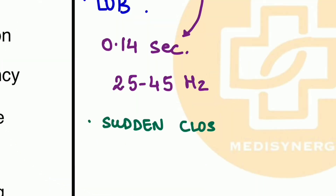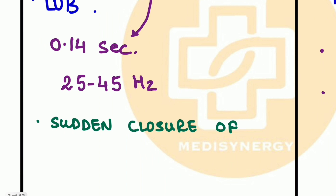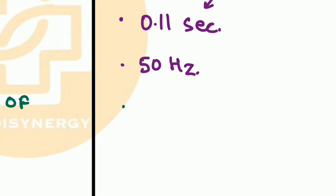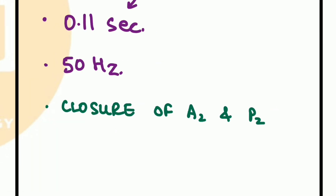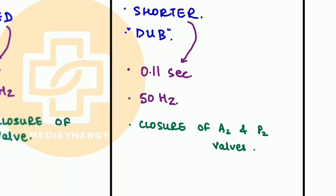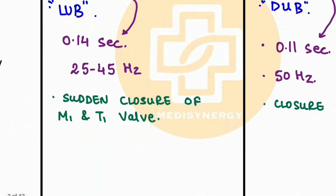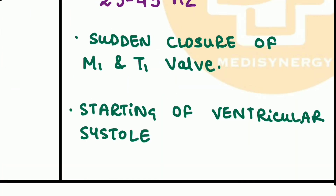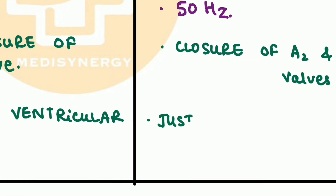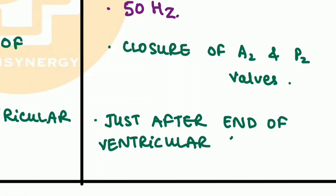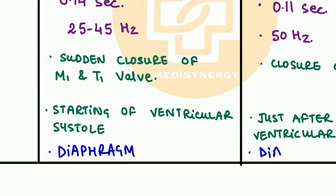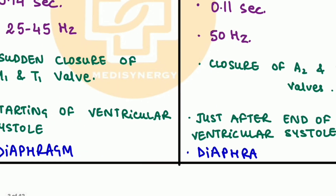When there is sudden closure of the mitral and tricuspid valves, we hear the first heart sound, and when there is closure of the aortic and pulmonary valves, we hear the second heart sound. The timing of the first heart sound is at the start of ventricular systole, and the second heart sound occurs just after the end of ventricular systole. Both heart sounds can be heard using the diaphragm part of the stethoscope.